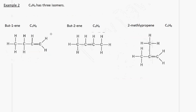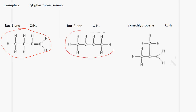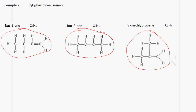We have another example with the molecular formula C4H8, and we see that there are three isomers. This one is called but-1-ene, this is but-2-ene, and this last one is called 2-methylpropene. So they all have the same molecular formula, but the structures are drawn differently. And that brings us to the end of the homologous series — alkanes and alkenes.